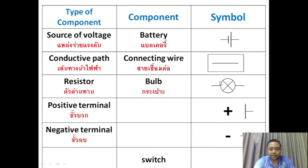Next: positive terminal. The positive terminal is in the battery, and this one is the symbol of the positive terminal. Next: negative terminal. This is the symbol of the negative terminal. And the last component is called the switch.